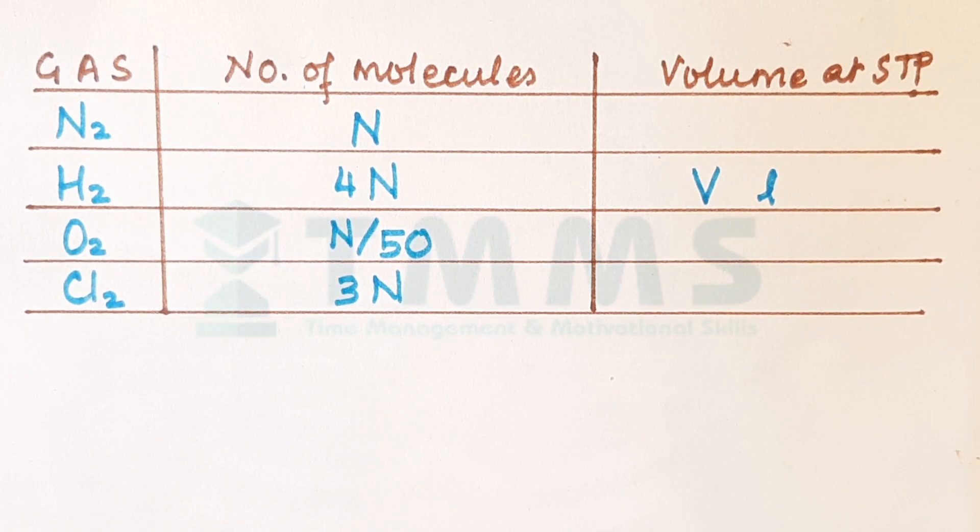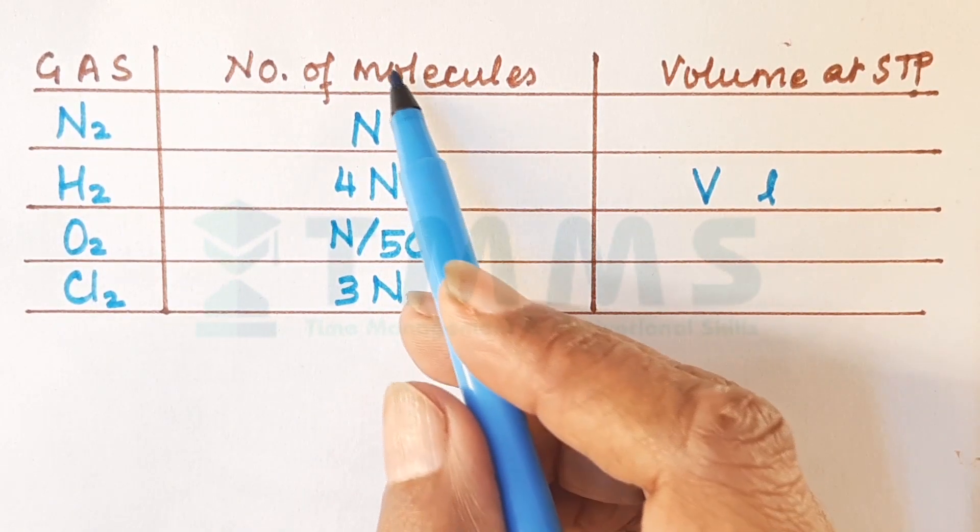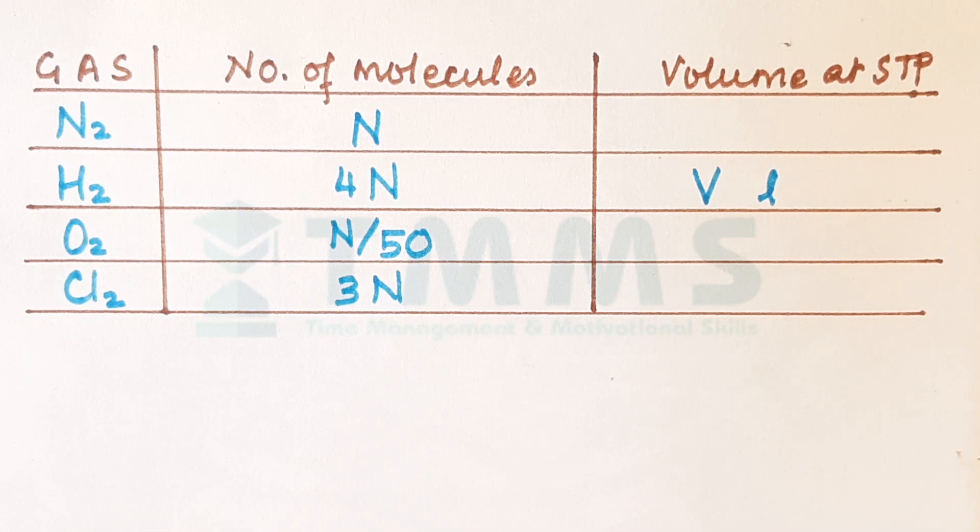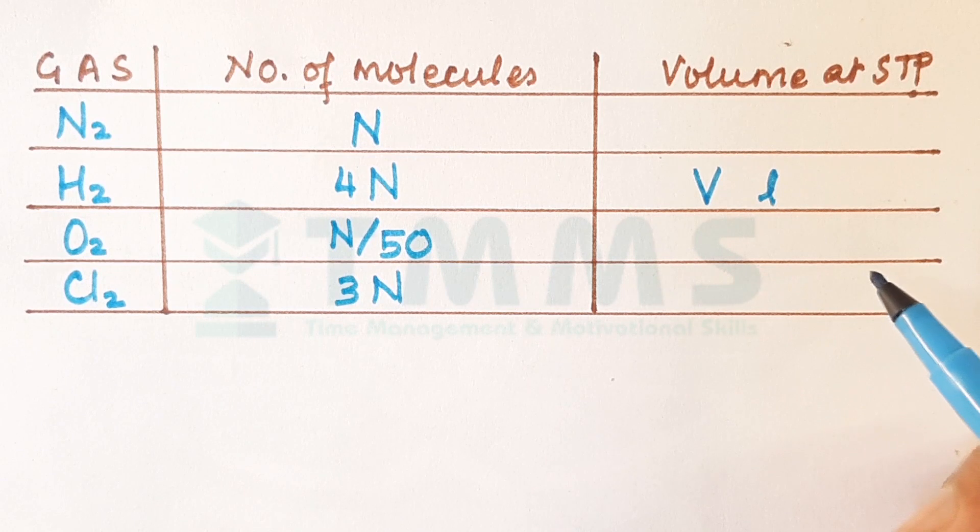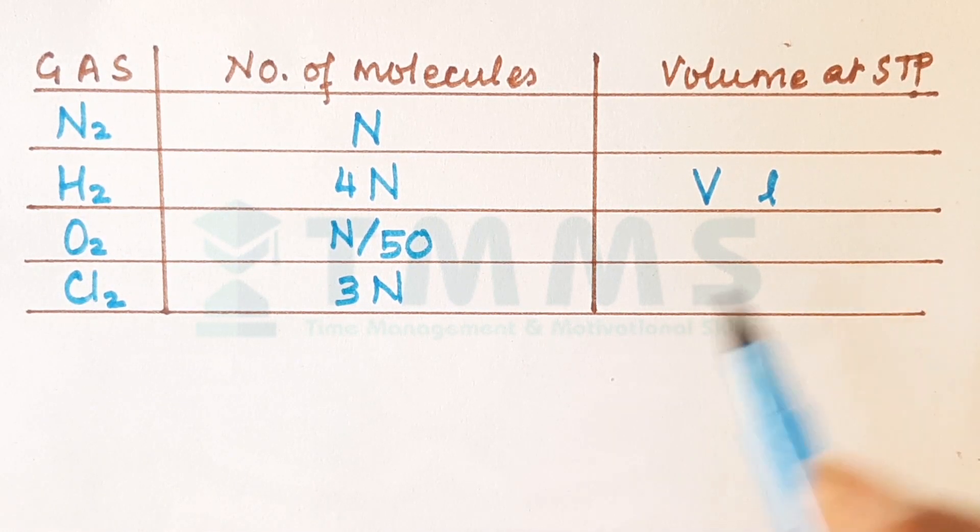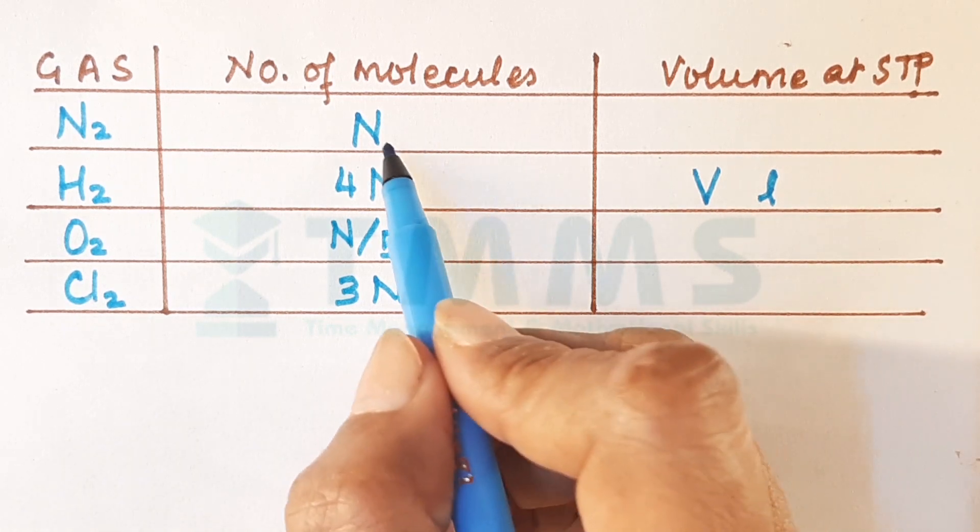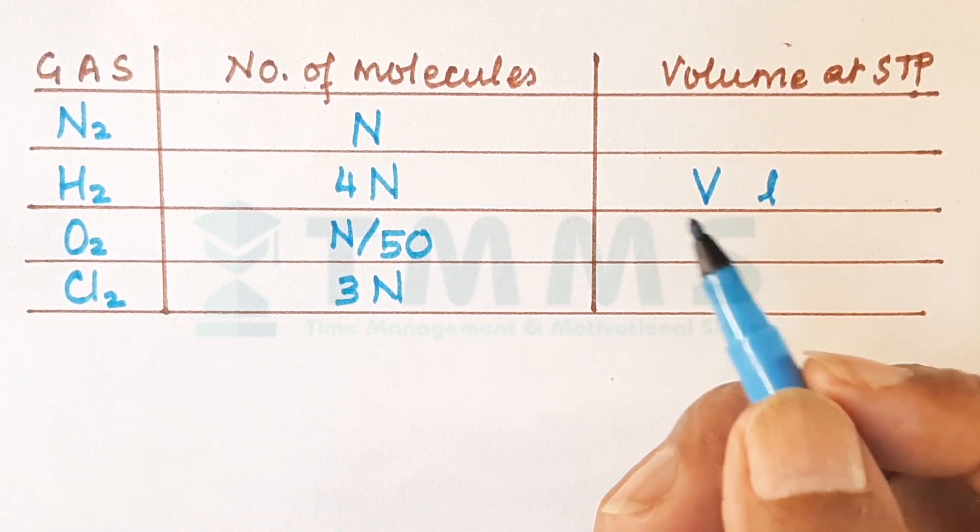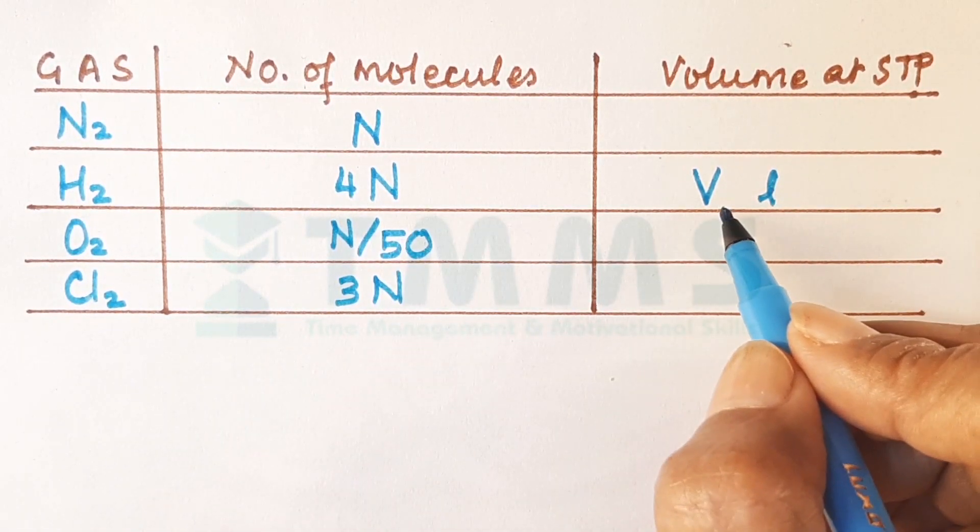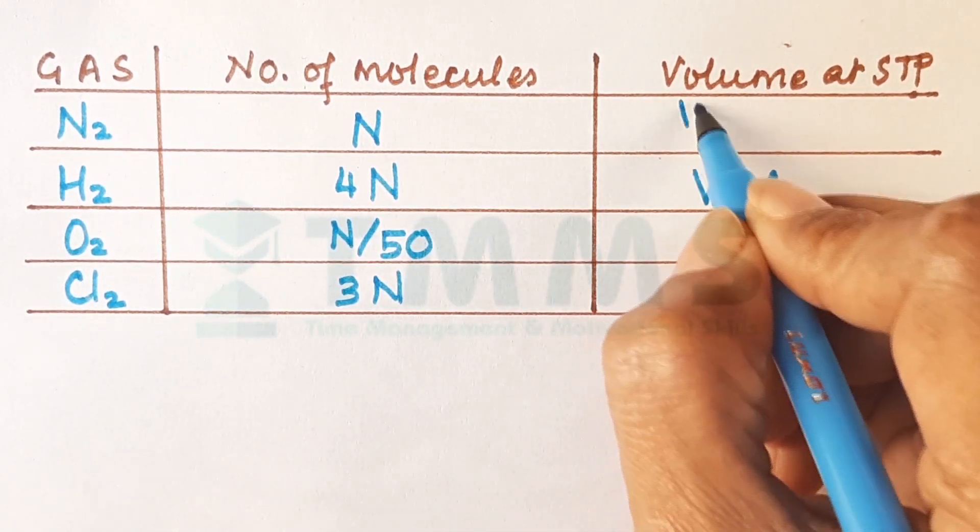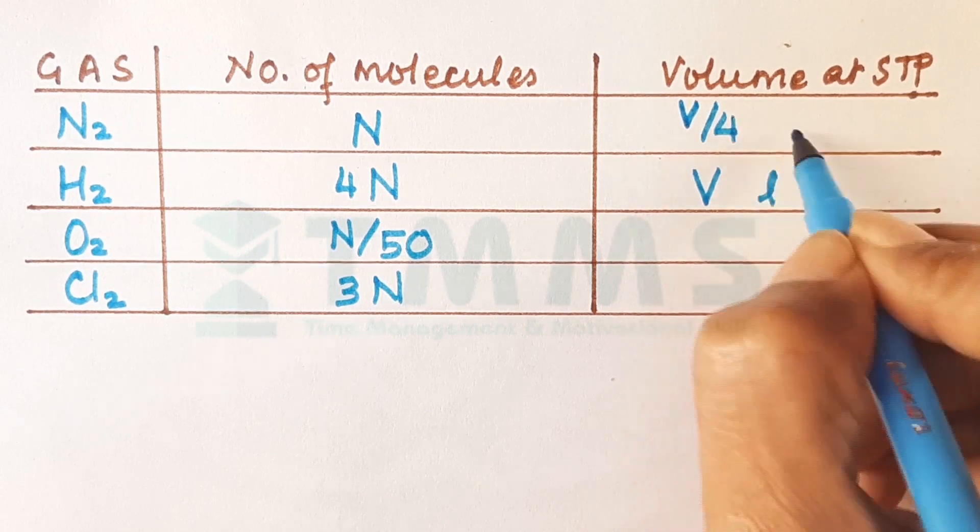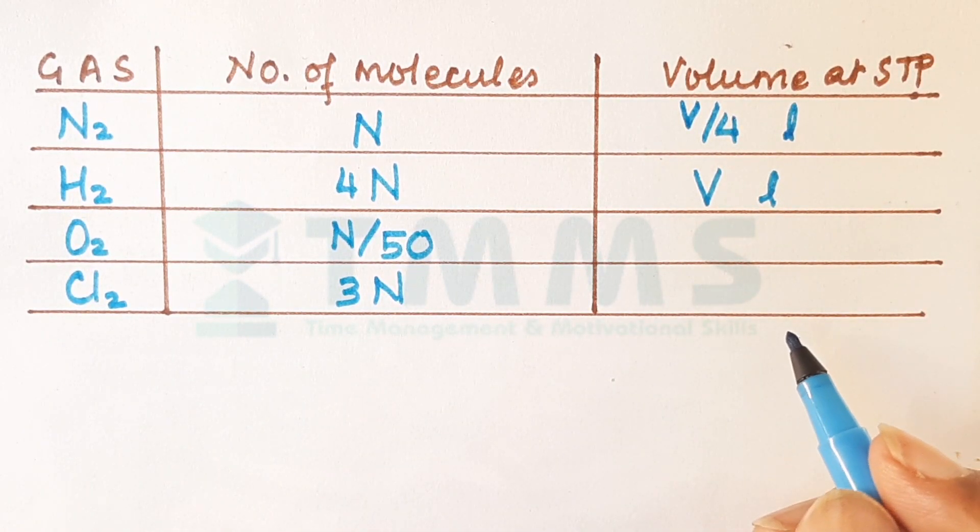In this case you will see the gases are given nitrogen, hydrogen, oxygen, chlorine and we have been given number of molecules instead of volume. So number of molecules is given and we have to find the volume at STP. Now here again understand that the second important tip is when molecules are given find the volume corresponding to N molecules. So if 4N molecules are having volume of V liters then N will be V upon 4 liters. Got that?